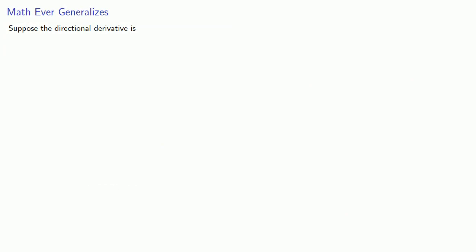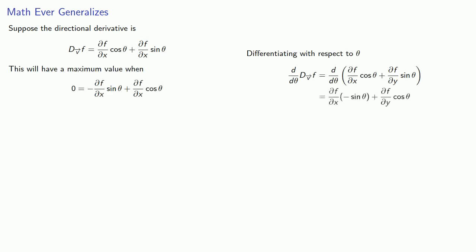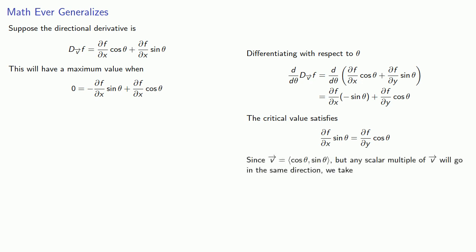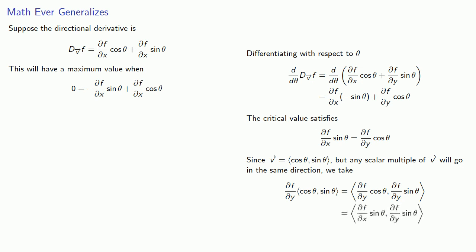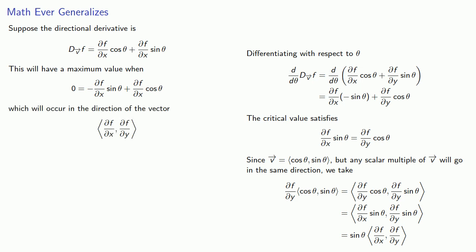We can generalize this process. Suppose our directional derivative is given by a general formula. To find the maximum value, we differentiate with respect to θ and solve for the critical value. While our direction is expressed as (cosine θ, sine θ), any scalar multiple goes in the same direction. Multiplying through by the partial with respect to y, and using the fact that equals means replaceable, the partial of f with respect to y times cosine θ equals the partial of f with respect to x times sine θ. Removing the common factor of sine θ, the direction of maximum increase turns out to be (∂f/∂x, ∂f/∂y).